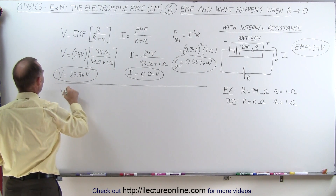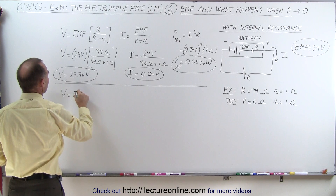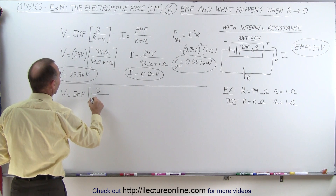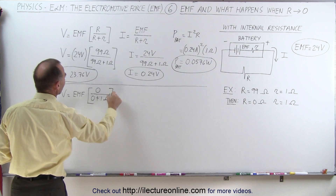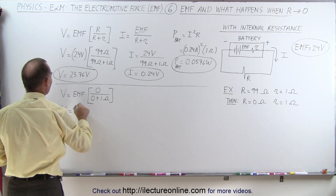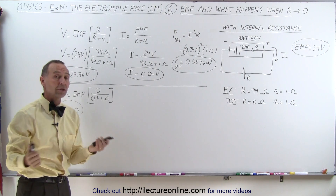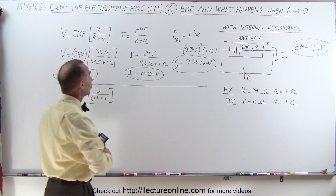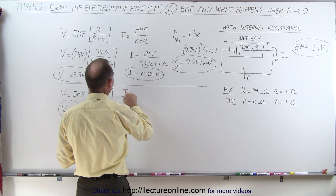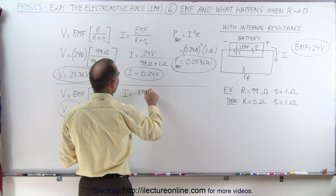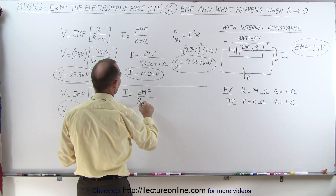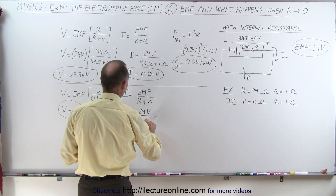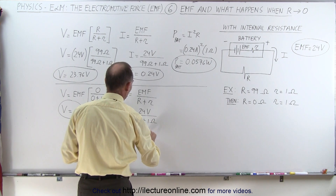But now, what happens when the external resistance goes to zero? The potential, or the voltage supplied to the circuit, is equal to the EMF times the ratio of the circuit resistance divided by the circuit resistance plus the internal resistance. You can see that the voltage supplied equals zero — no voltage supplied to the circuit because there's no resistance there. However, the current to the circuit will still be there. I is going to be equal to the EMF divided by the circuit resistance plus the internal resistance, which in this case is 24 volts divided by 0 plus 1 ohm, which is going to be 24 amps.